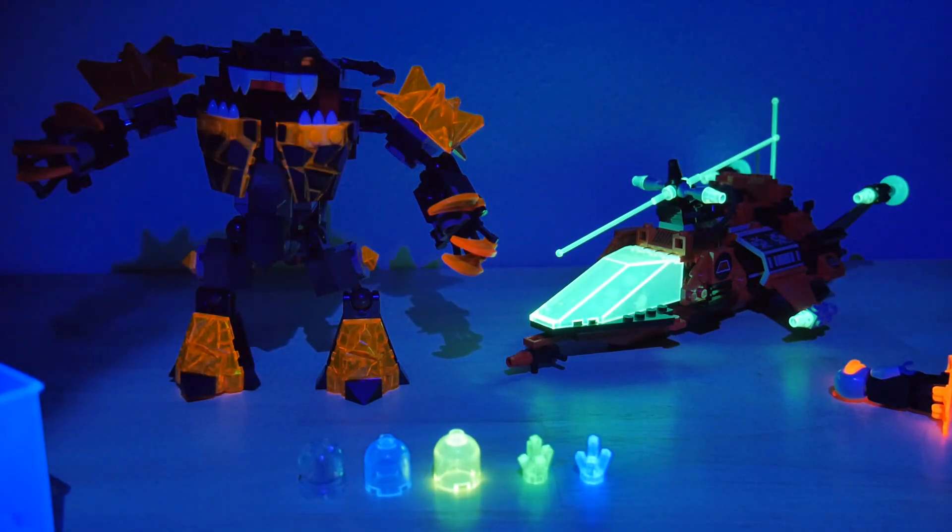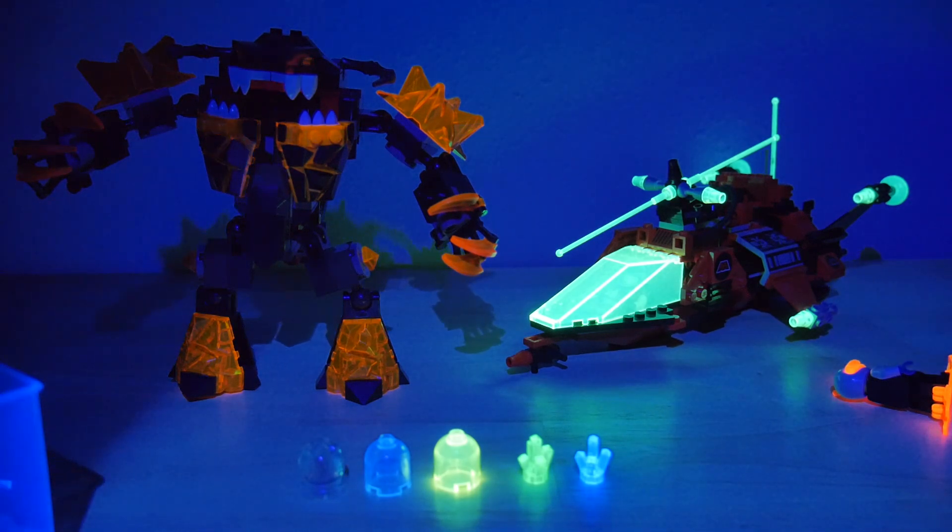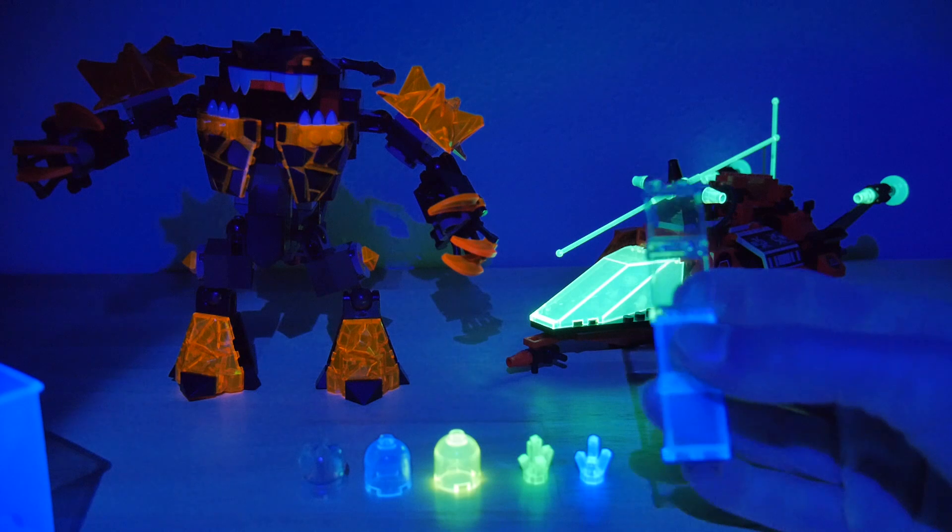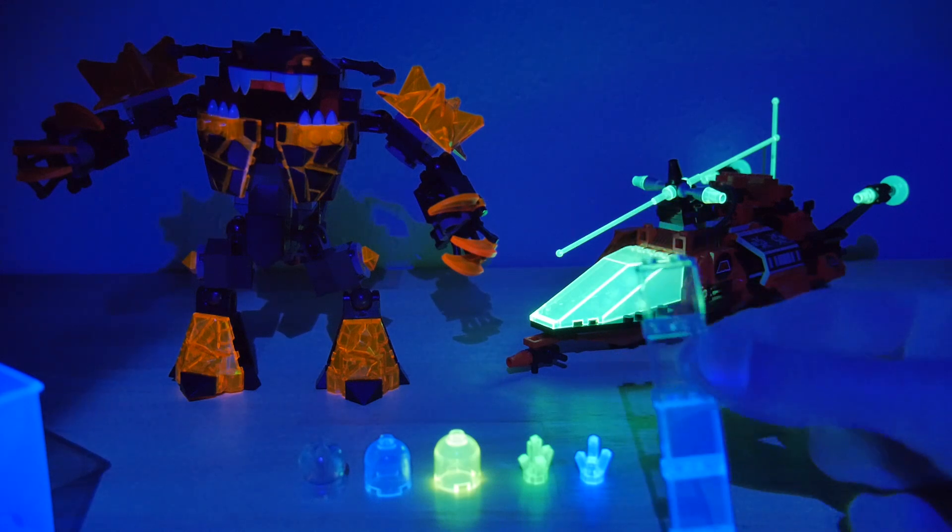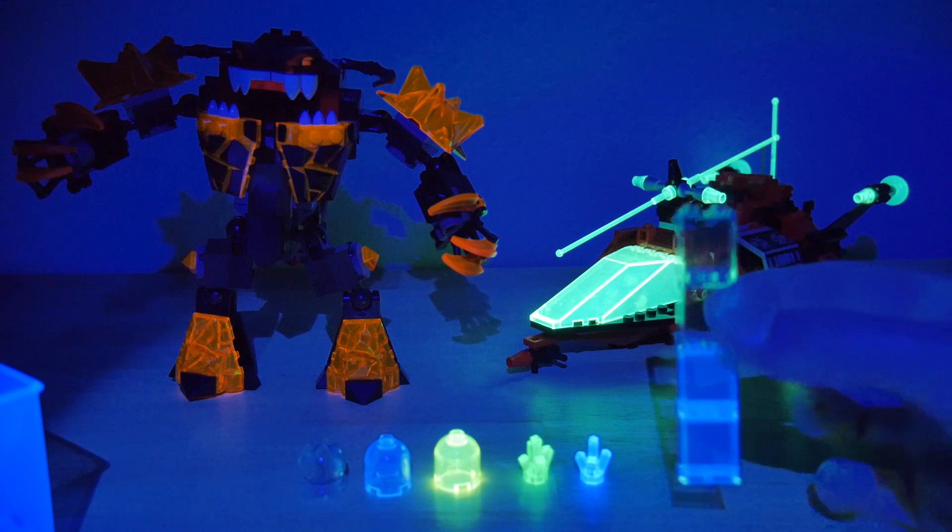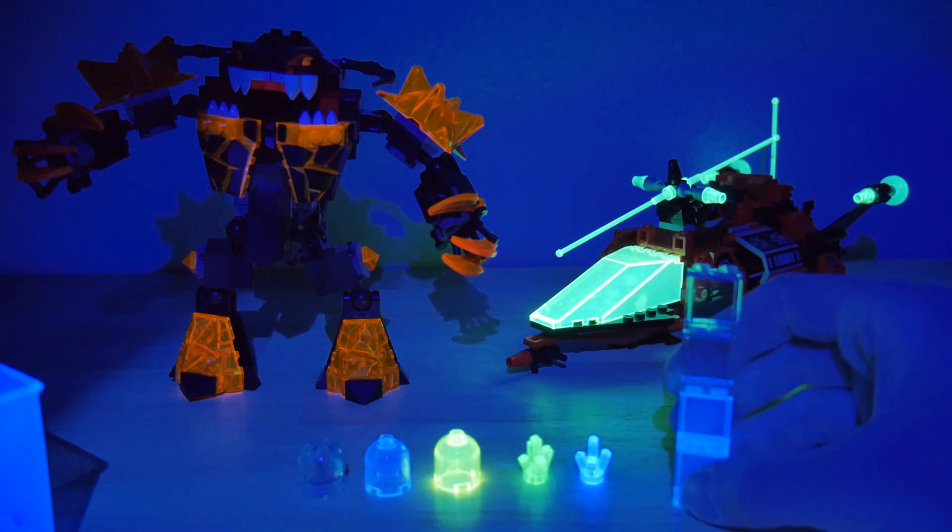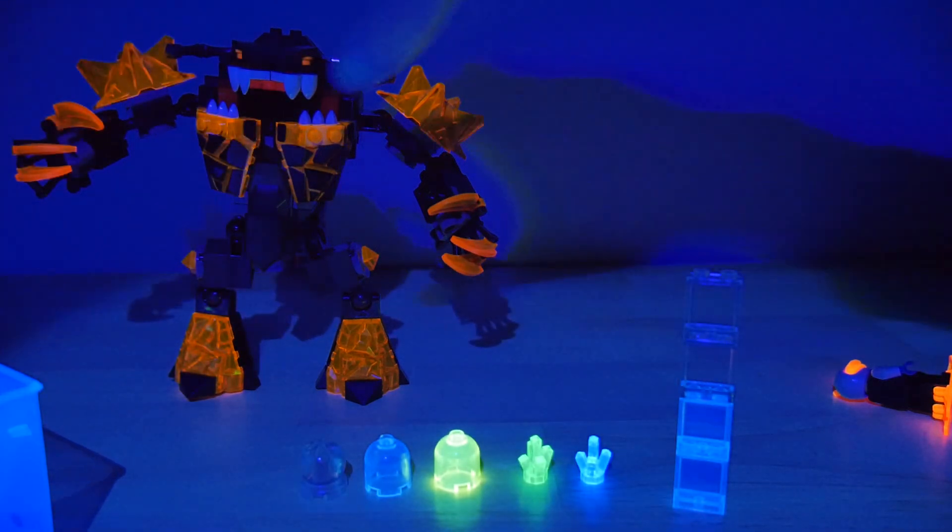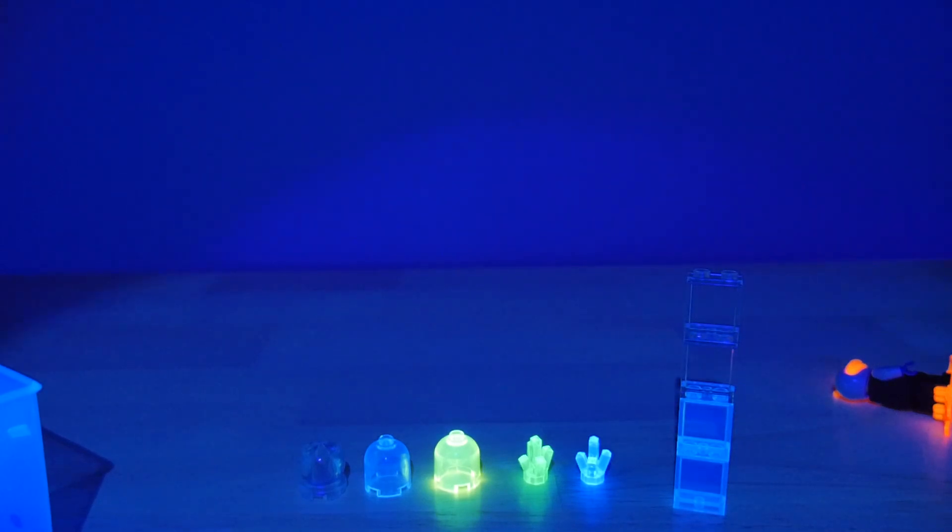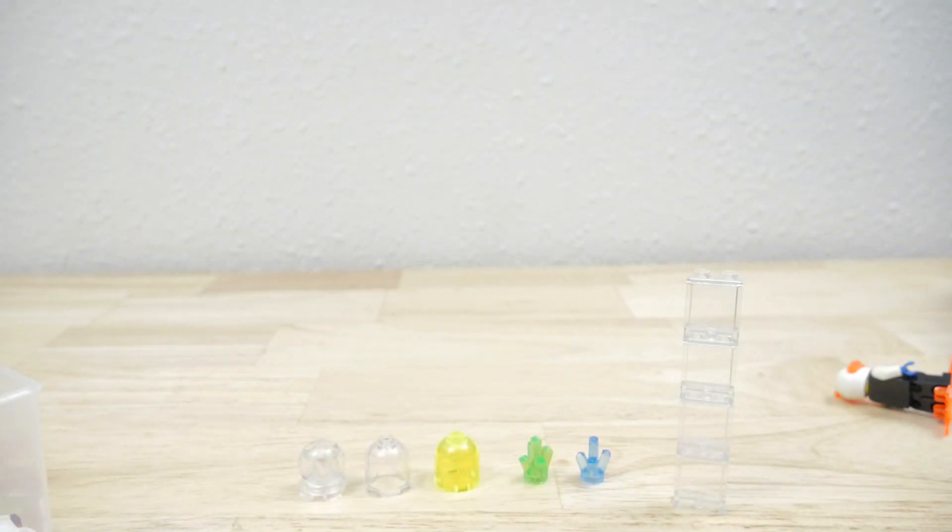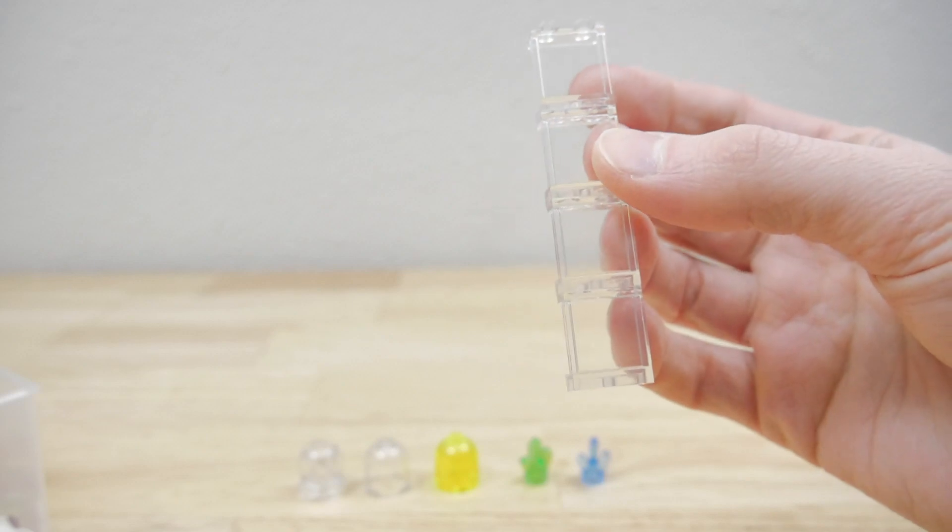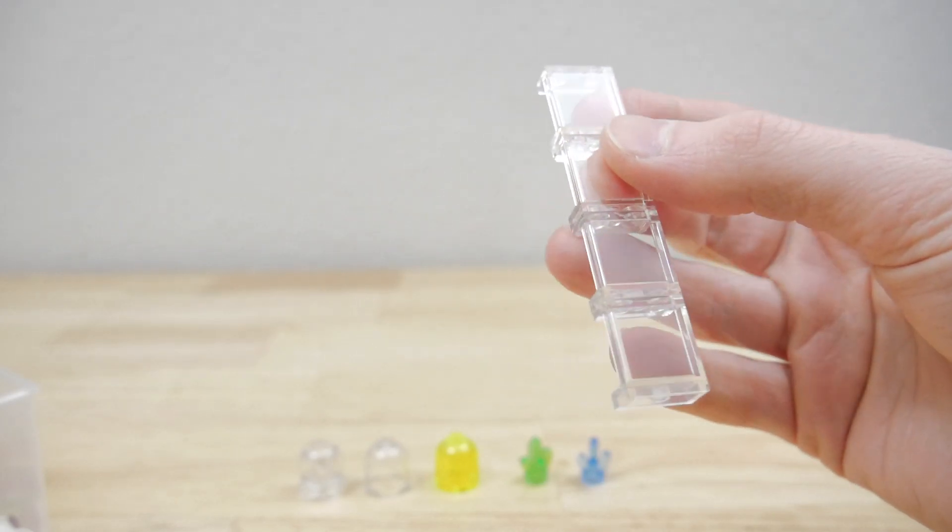Now an interesting example of that is the new versus old trans-clear colors. So here are some 1x2x2 panels. Notice that the top ones don't glow. The bottom ones do glow. The difference is the top ones are the old polycarbonate, and the bottom ones are the newer kind of milky colored transparent parts that LEGO's introduced in the last couple years.